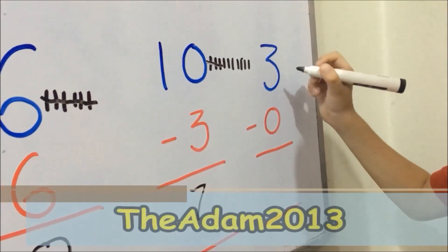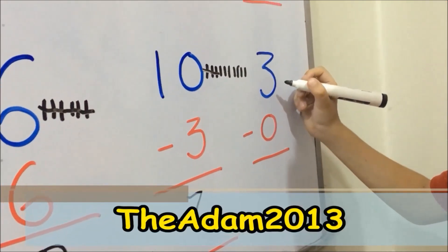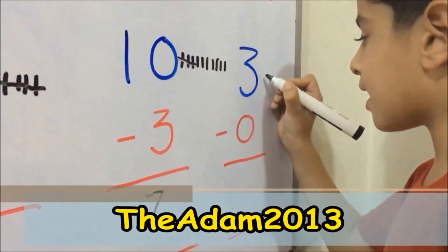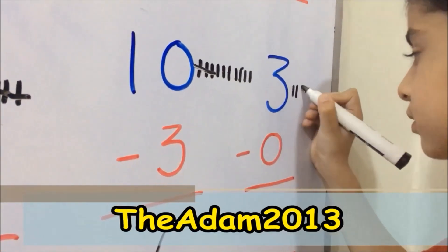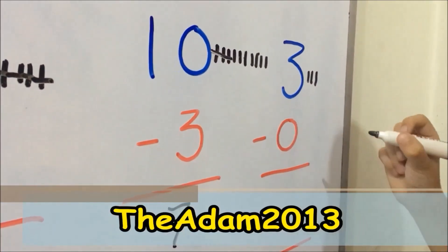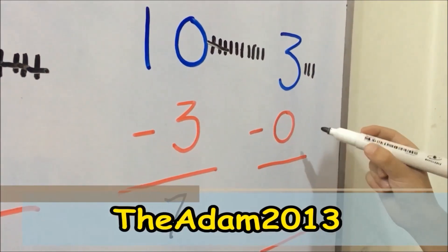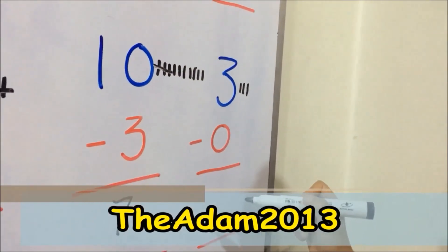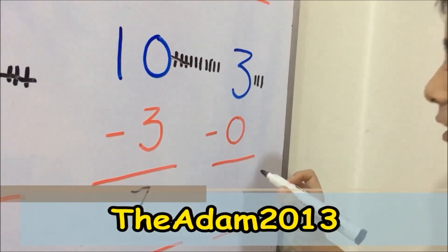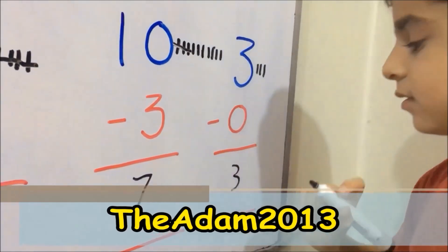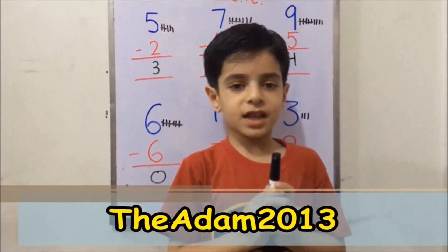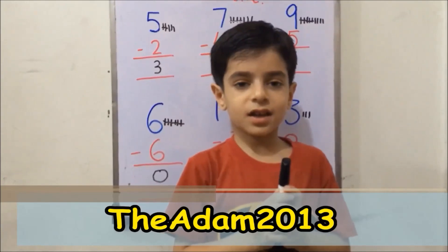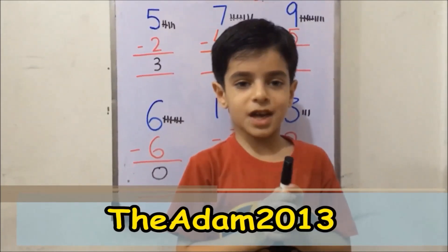Friends, you can write 3 lines. Friends, we have 3 lines — 0, 0, we have 3 lines. Friends, we have minus and addition exercises so that you can practice and improve.